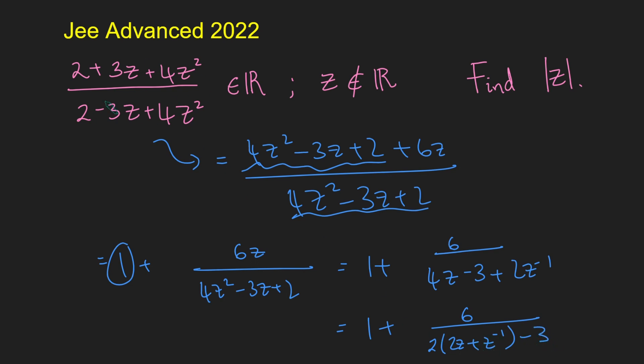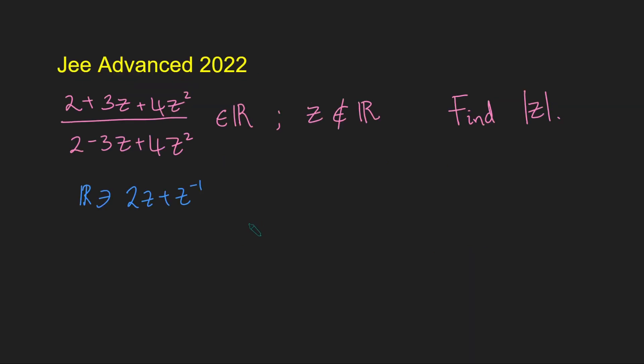Okay, so all I've done is I've rearranged this quantity here. But what's really nice about this is we know that this is a real number. And the only way that this can possibly be a real number is if this guy here is a real number. So we know that 2z plus z inverse is a real number.